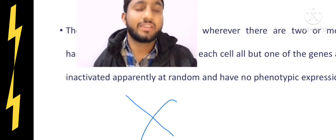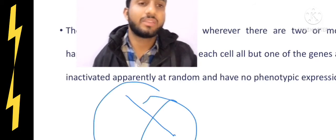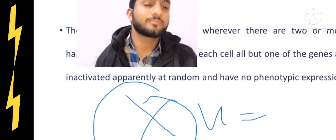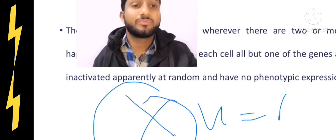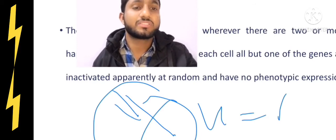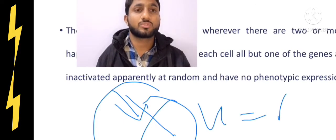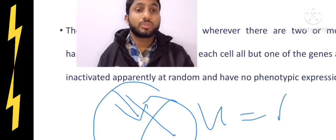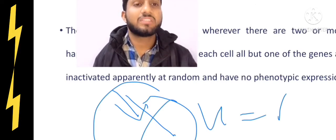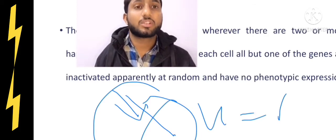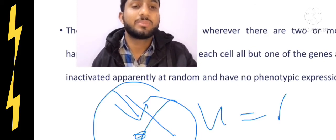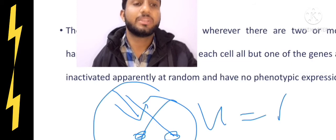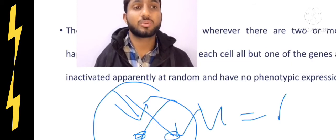If there are a number of genes present on this X chromosome, suppose there are two genes present on X chromosomes, if both of them become inactive, then there will be no phenotypic effect at all. If only one of the genes becomes inactive and one of them is expressed, then we can say there will be some sort of phenotypic effect.